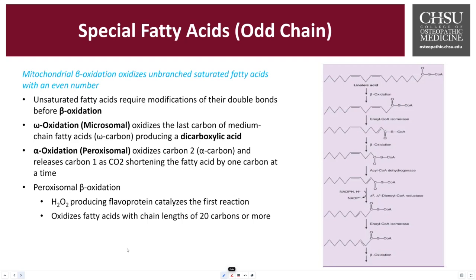Gluconeogenesis is the process of synthesizing glucose from non-carbohydrate sources like amino acids, lactate, and glycerol, occurring primarily in the liver or kidneys. Propionyl-CoA is converted to succinyl-CoA through a series of reactions, and succinyl-CoA can then enter the citric acid cycle. So the intersection is still the citric acid cycle, but propionyl-CoA from odd-chain fatty acids provides another source of carbon for creating energy.